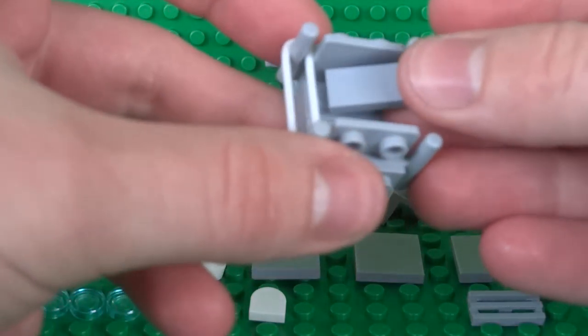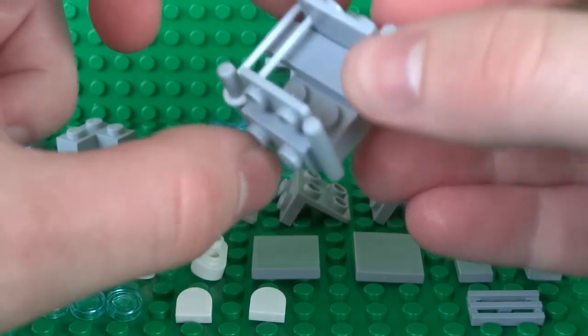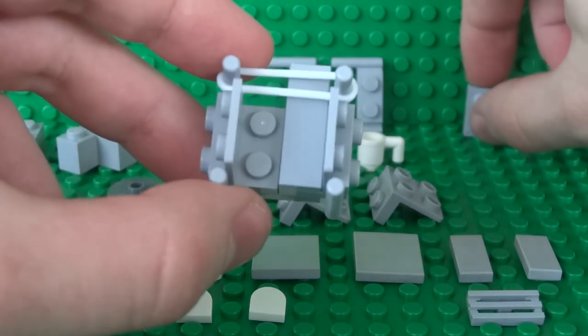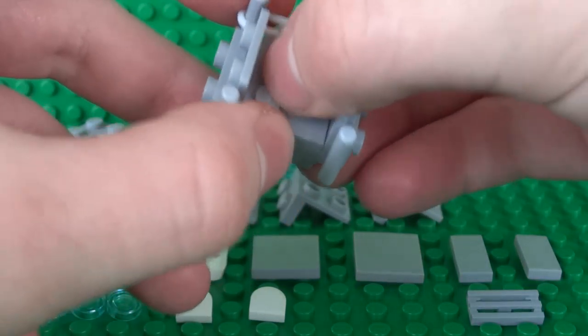Then underneath that, just slide a 1x3 tile over on one side and a 1x2 plate over on the left.